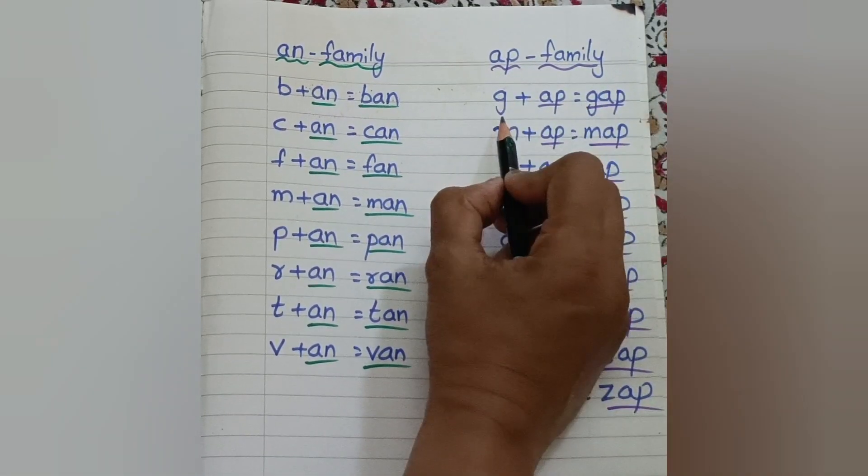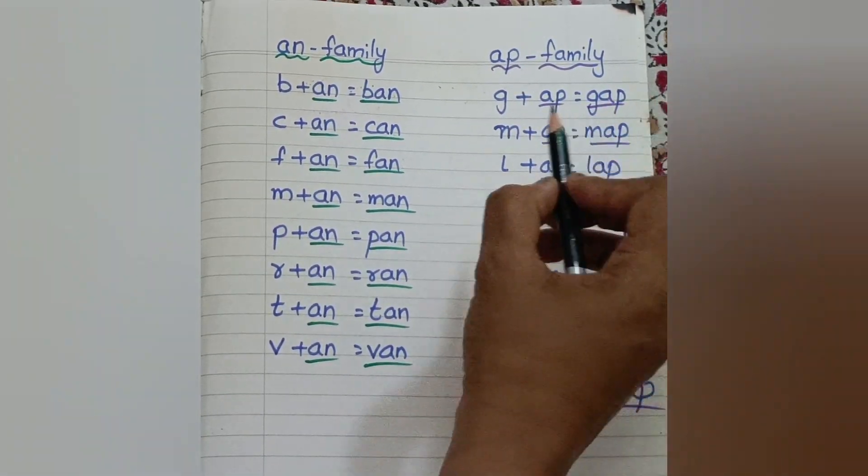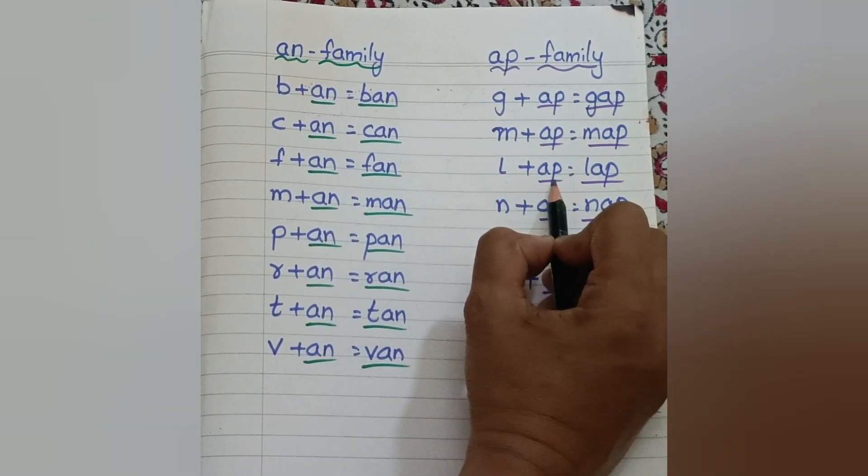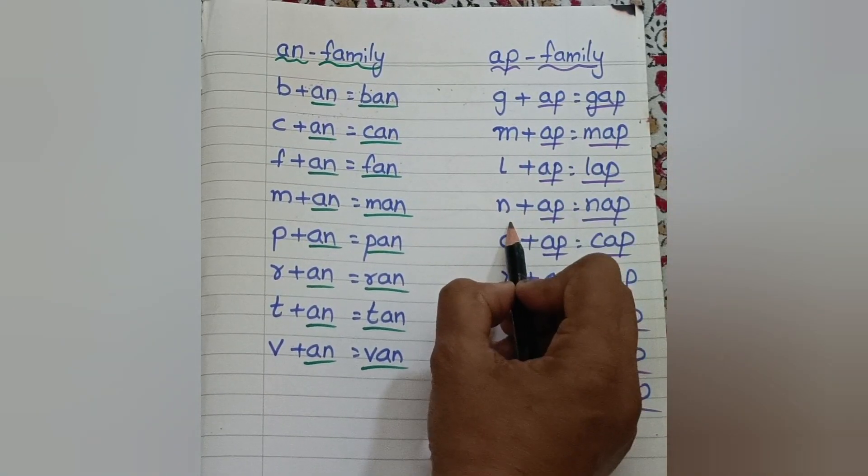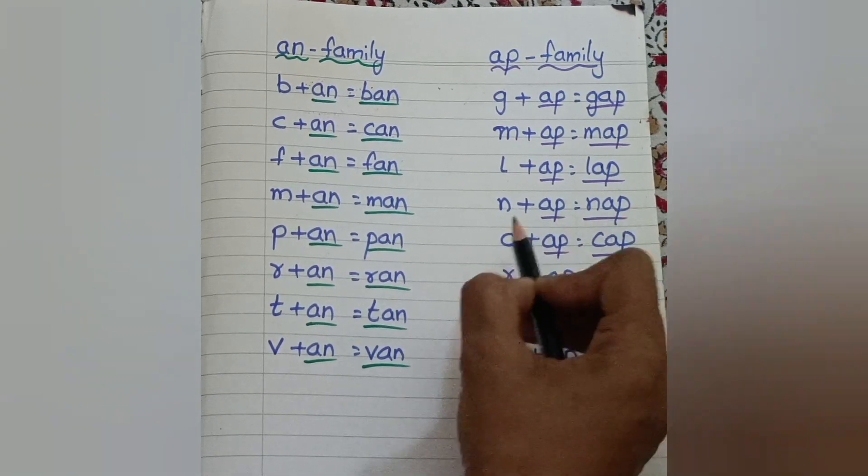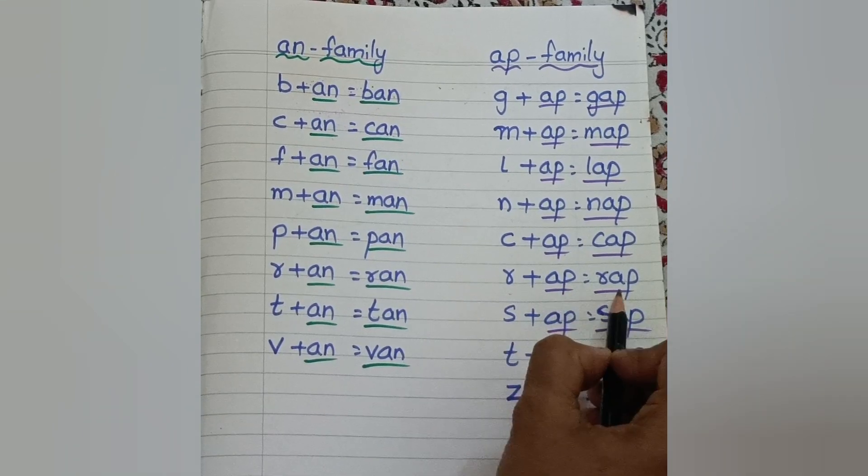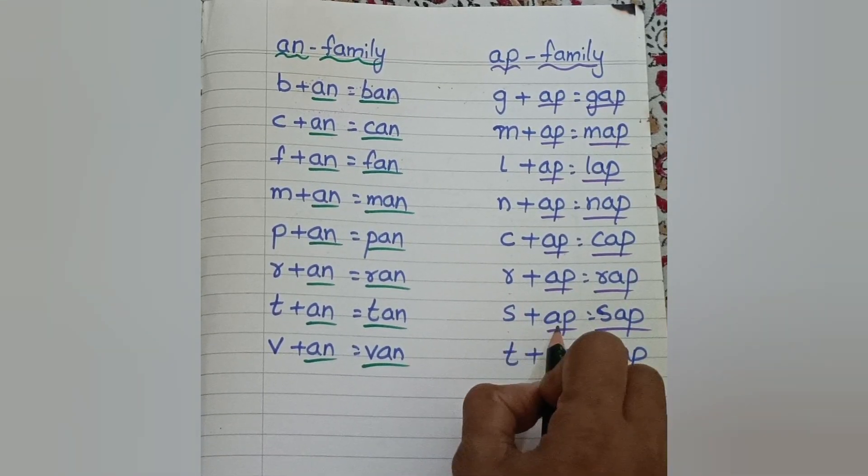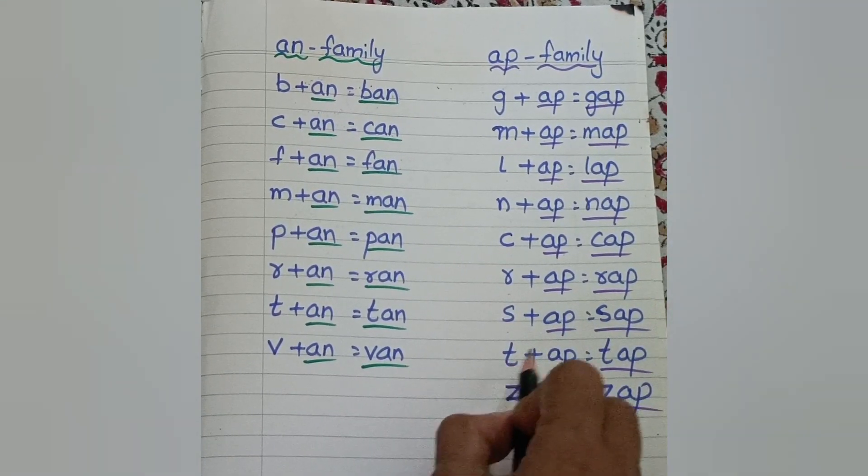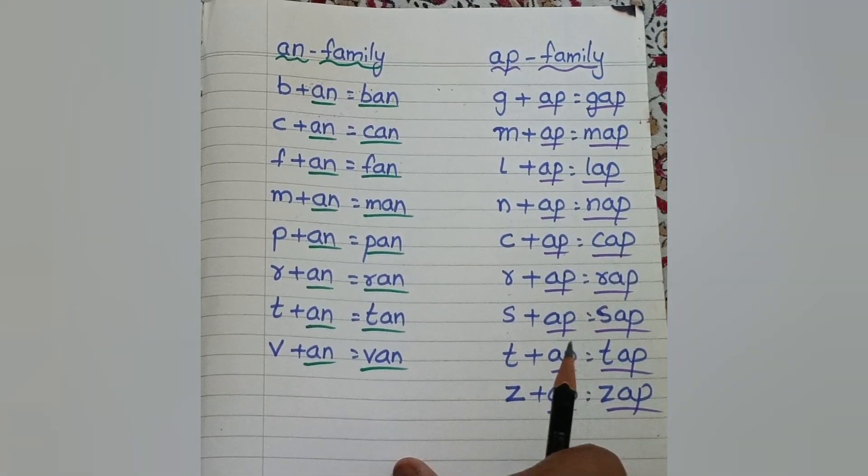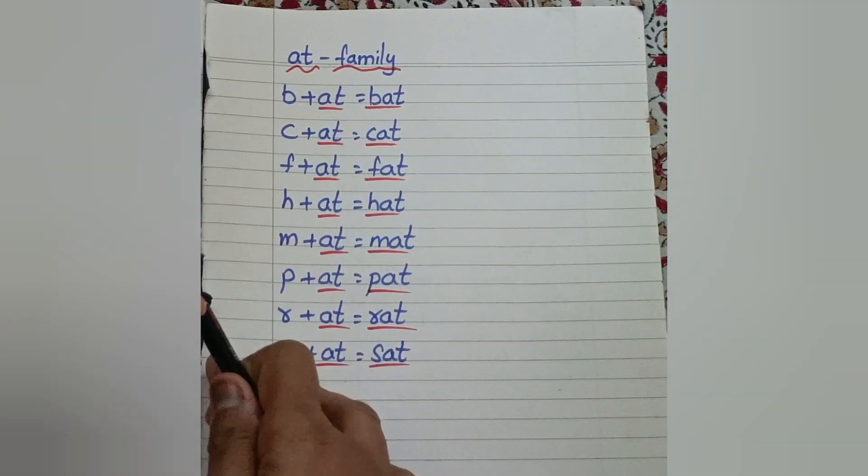Next family is Ap. G, Ap: Gap. M, Ap: Map. L, Ap: Lap. N, Ap: Nap. K, Ap: Cap. R, Ap: Rap. S, Ap: Sap. T, Ap: Tap. Z, Ap: Zap.